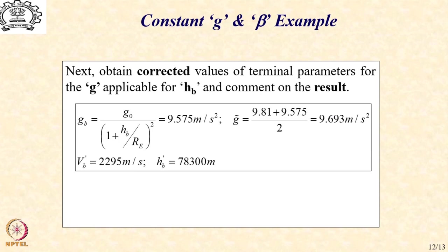I will leave you to verify that if we use this value of gravity, the revised value of the velocity will be 2295 m/s, and the revised altitude will be 78,300 meters instead of 77,600 meters. So, which means that we have roughly about 700 meters of higher altitude and roughly about 15 m/s higher velocity.